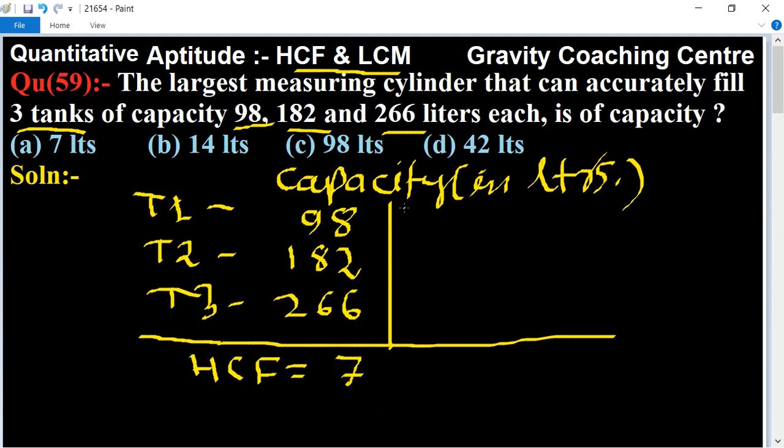98 divided by 7 equals 14. 182 divided by 7 equals 26. And 266 divided by 7 equals 38. Now again check these numbers for a common factor.